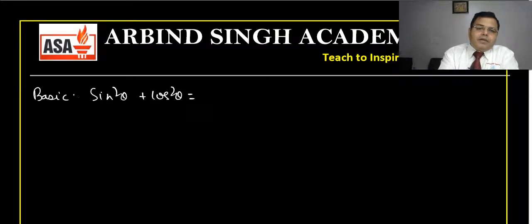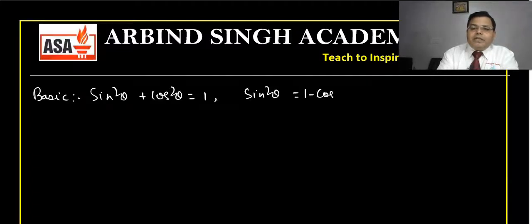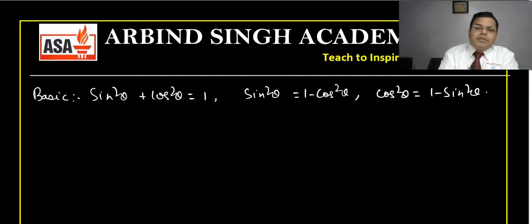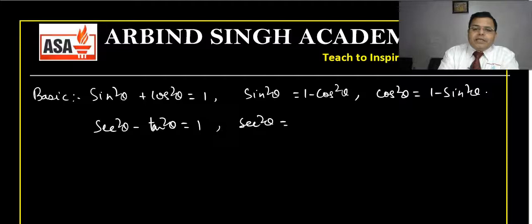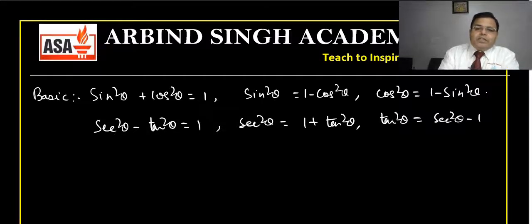There are three basic formulas. The first one: sine squared theta plus cosine squared theta equals one. This can be rearranged as sine squared theta equals one minus cosine squared theta, and cosine squared theta equals one minus sine squared theta. This formula is very important.